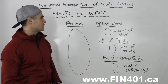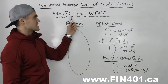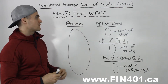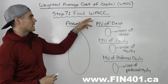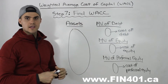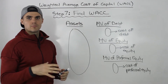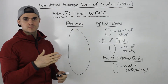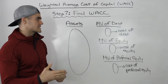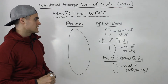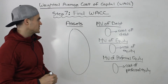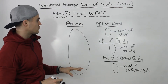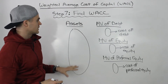Welcome back, everybody. Moving on to step seven, the final step, we have to find the weighted average cost of capital by using all the information from steps one to six. So before we do that, let's do a little review of what we did.